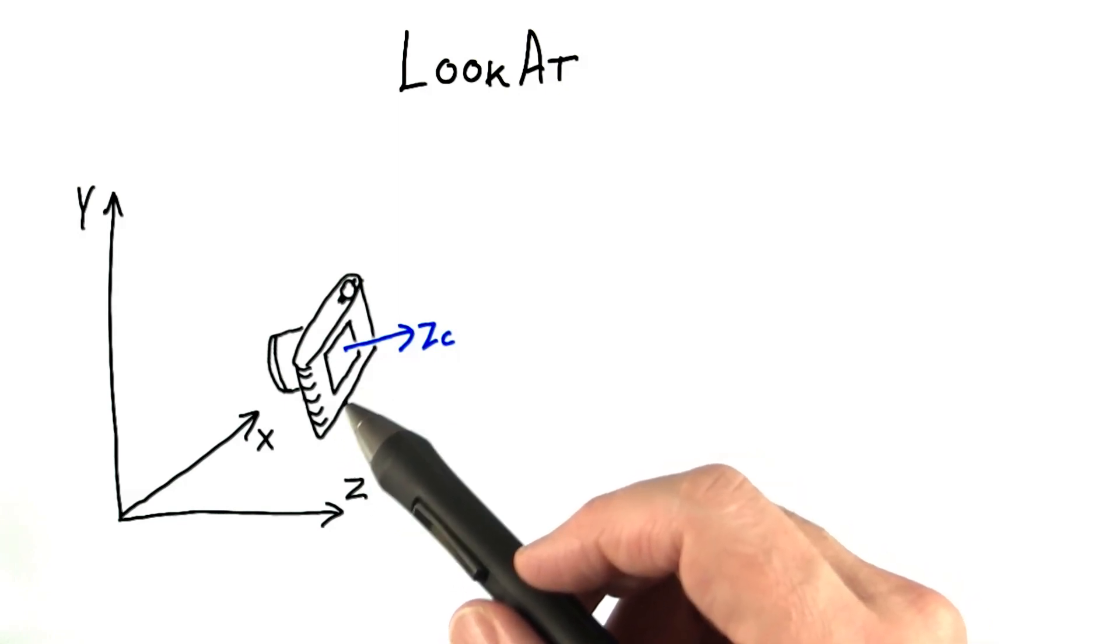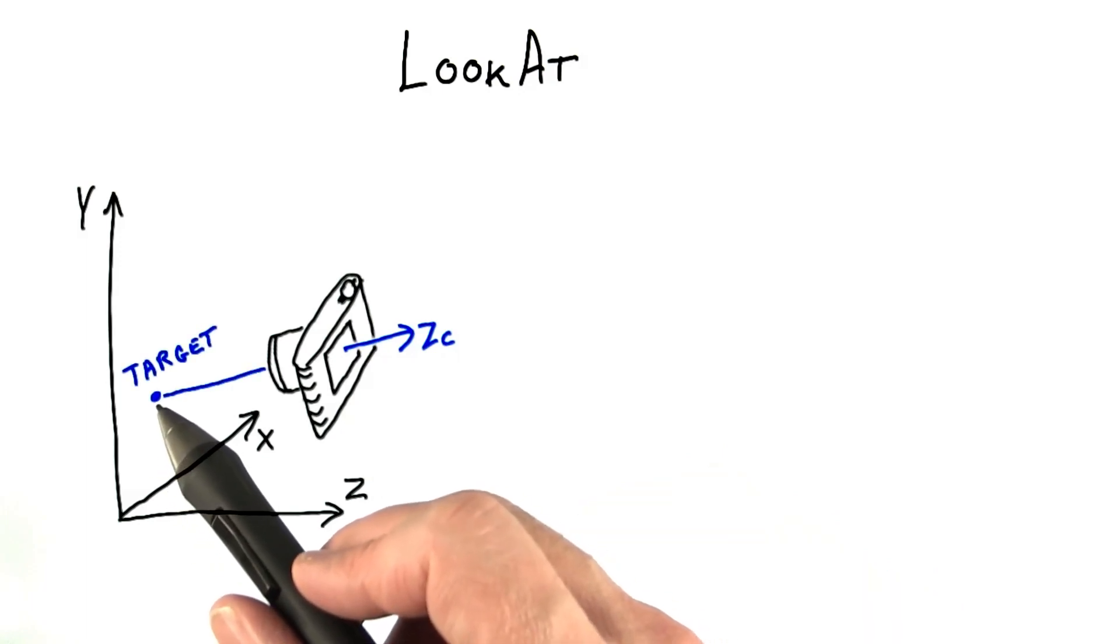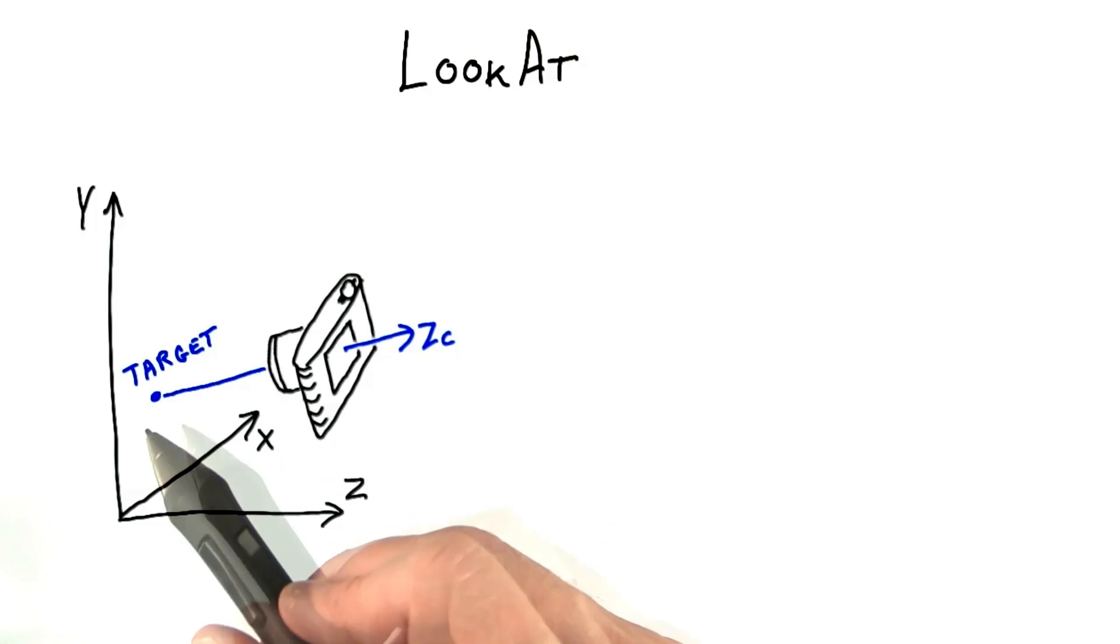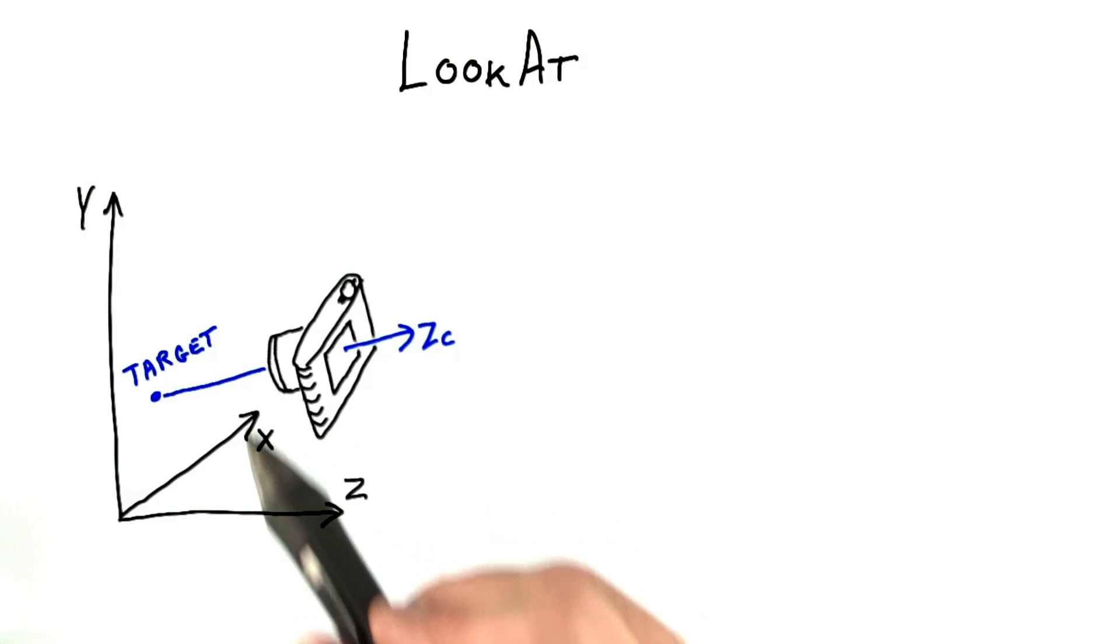To compute the rotation needed to orient our camera, we use what's called a look at system. This is pretty much what it sounds like. You define a target location for what direction you want the camera to look. This defines the negative z axis for the camera's frame of reference. In other words, how it's pointing in the world.